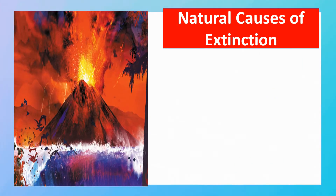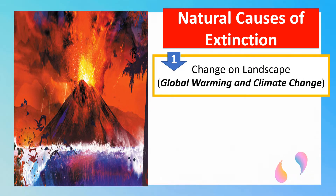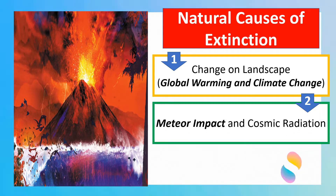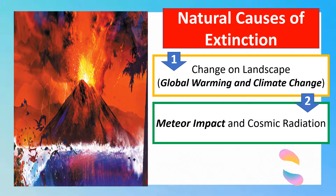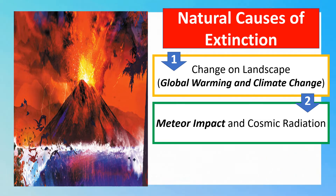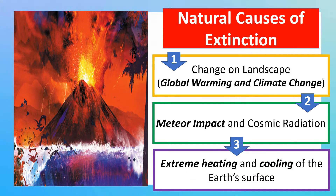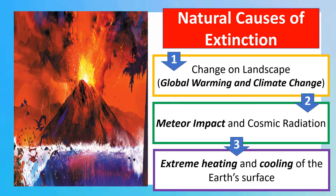Natural causes of extinction include the following. First, change of landscape because of global warming and climate change. Second, it can be caused by meteor impact and cosmic radiation — just like what happened with the extinction of dinosaurs. And lastly, extreme heating and cooling of the Earth's surface. Most of the mass extinctions in the history of life on Earth are caused by these natural causes.